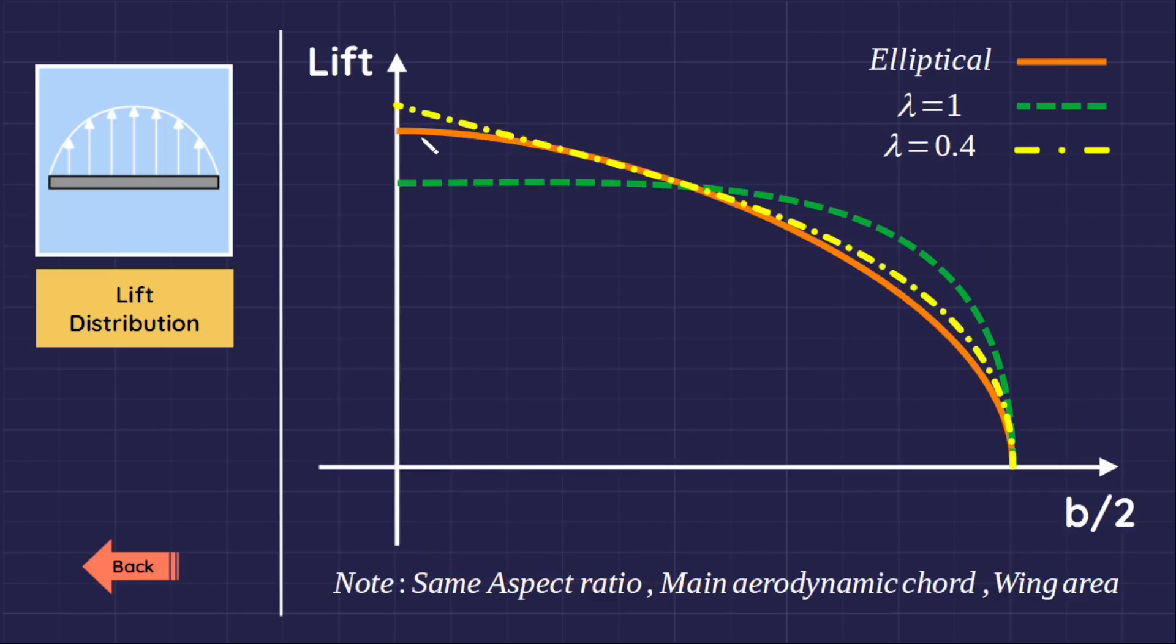Let's look at this graph. The orange line represents the elliptical lift distribution, the green one represents the lift distribution of a rectangular wing, and the yellow line represents the lift distribution of a wing that has a taper ratio of 0.4.